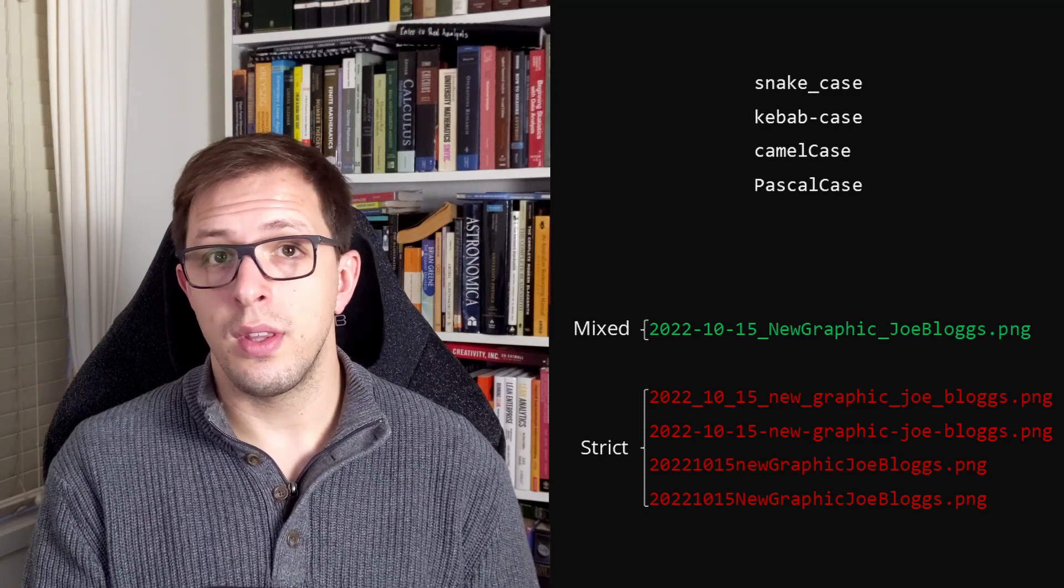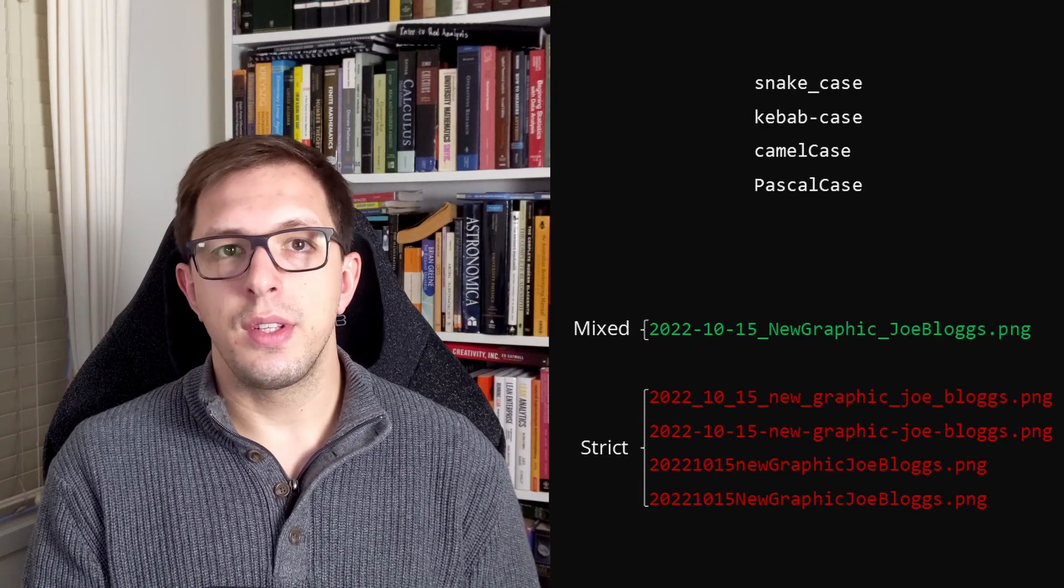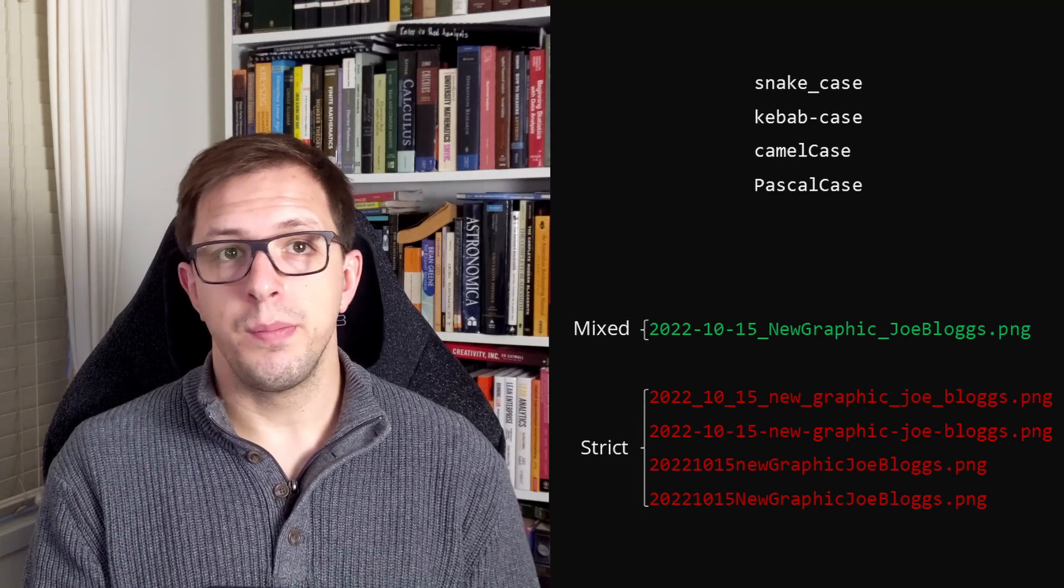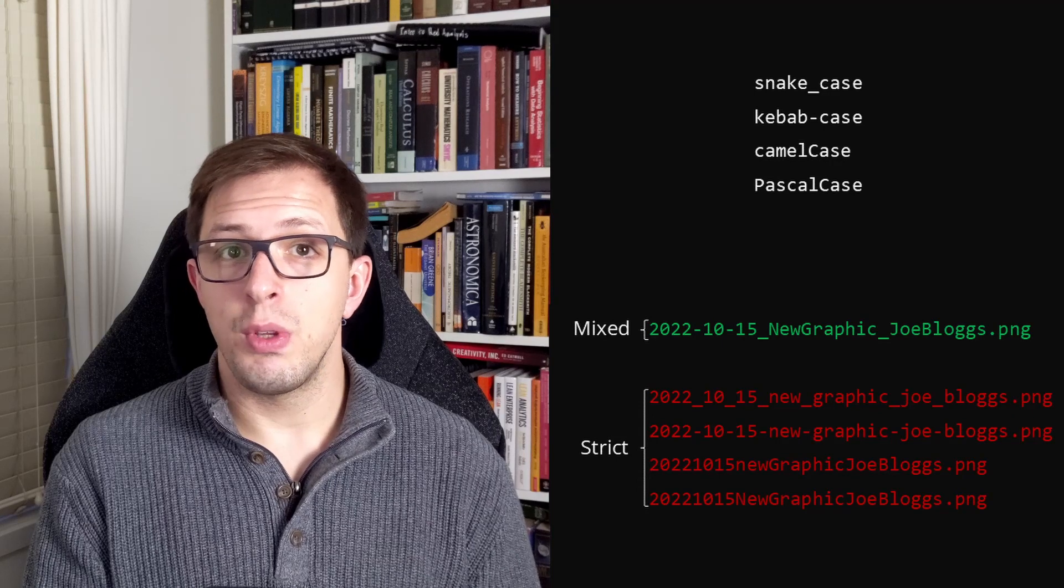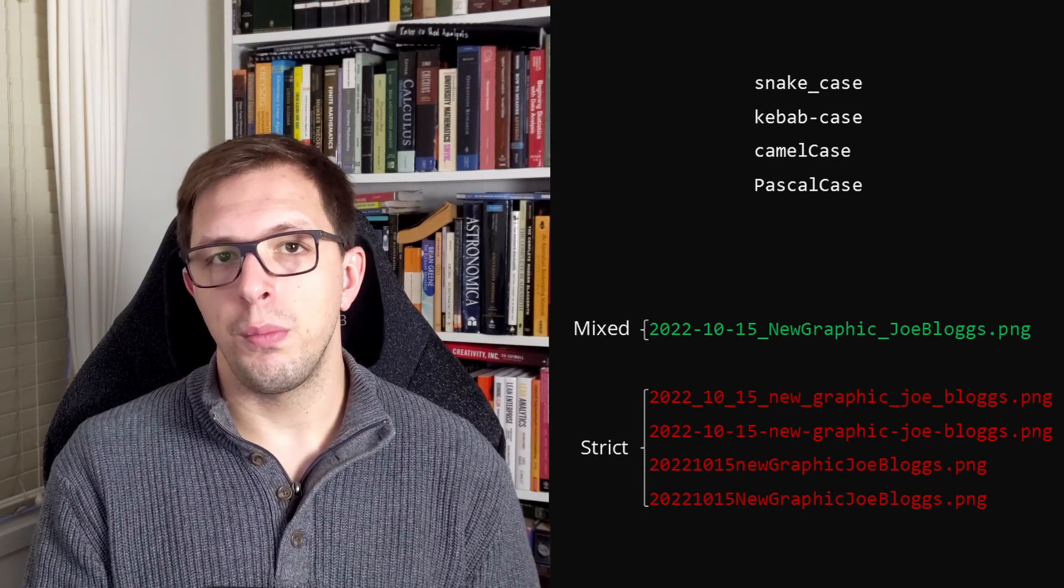You can use a combination of these to group things together visually. As an example, this mix of kebab, snake, and pascal case is easier to read than any of these others on screen that stick exclusively to one of the formats. Remember, for our naming convention to be useful, we want it to be human readable. This also helps prevent errors and increases buy-in from colleagues.